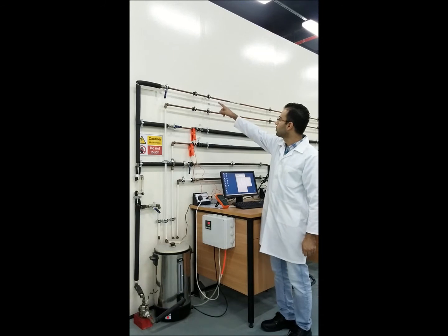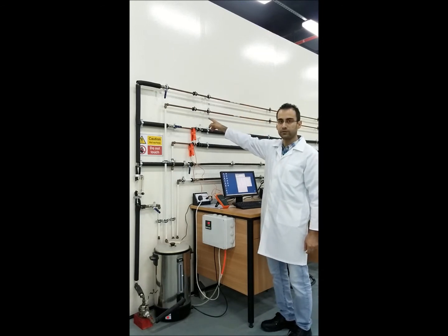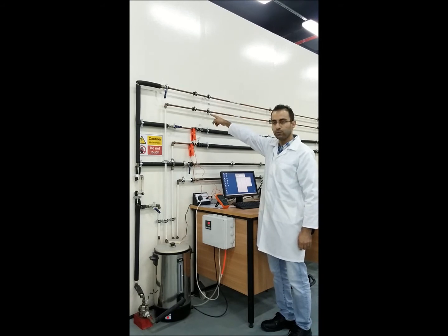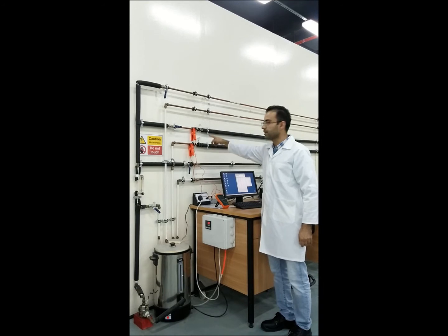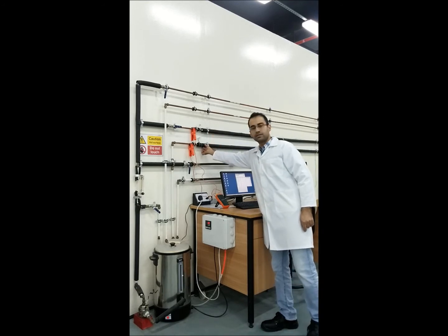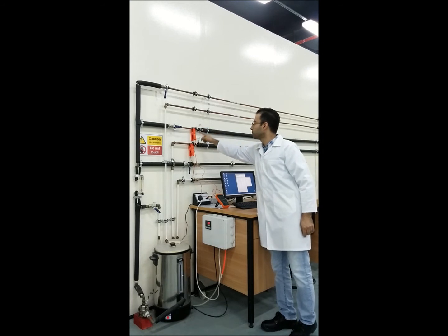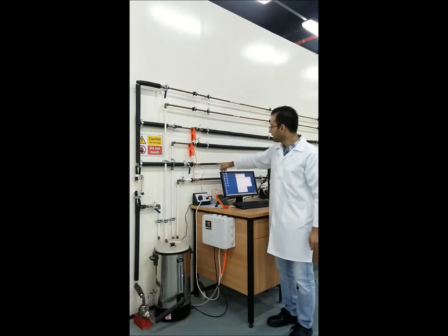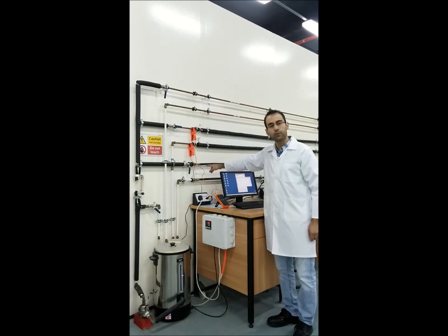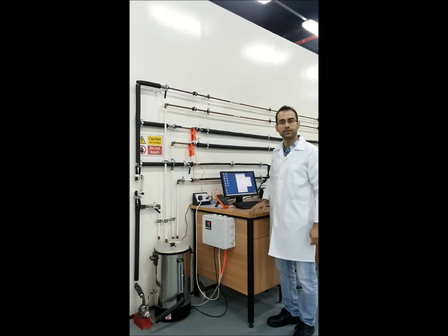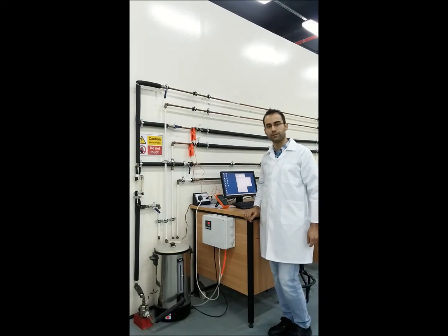At the top there is a long loop of unlagged pipes and we have two thermocouples at the beginning and the end of the loop. The second one is lagged pipes which has this black insulation and again we are getting two points of temperature. The third one is the finned pipe which is also fitted with two thermocouples to get the temperature.